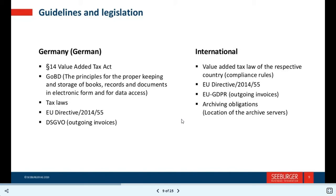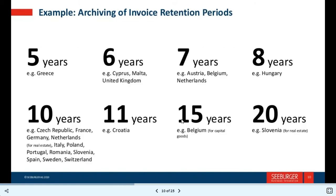Compliance tools include EU Directive 2014/55, EU GDPR, and outgoing invoice archiving obligations. Archive server locations matter — for example, invoice retention periods vary by country: Greece 5 years, Cyprus and Malta 6 years, United Kingdom and Austria, Belgium, Netherlands 7-8 years, Hungary 10 years, France, Germany, Netherlands, Liechtenstein also 10 years, Croatia 11 years, Belgium for capital goods 15 years, and Slovenia for real estate 20 years.